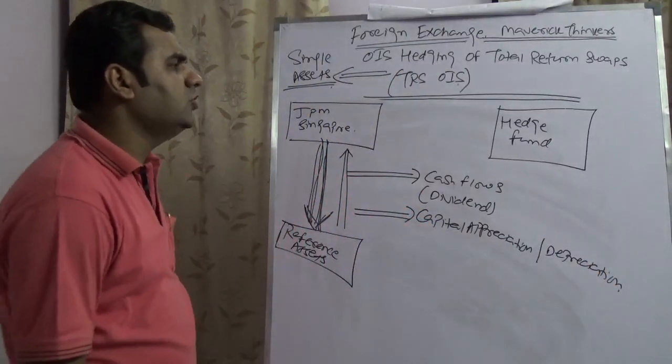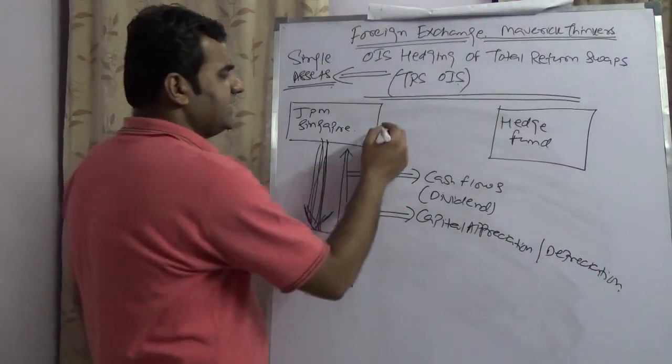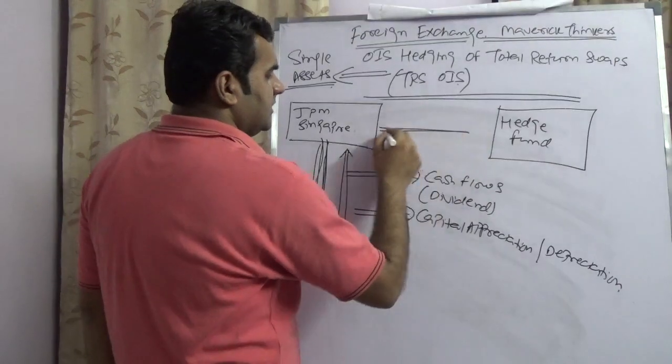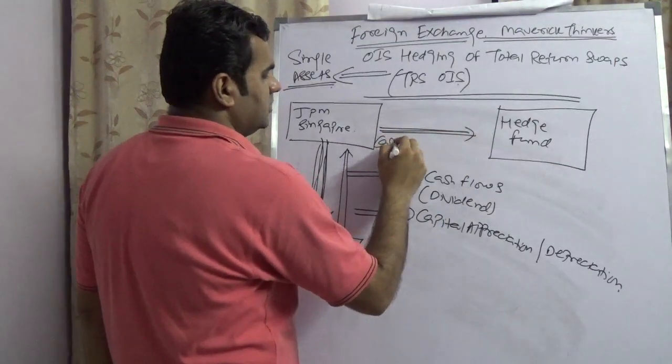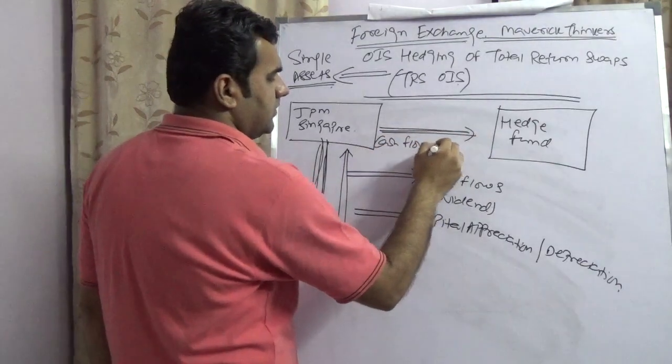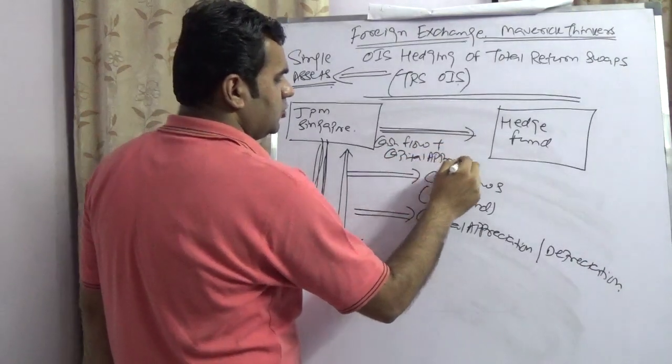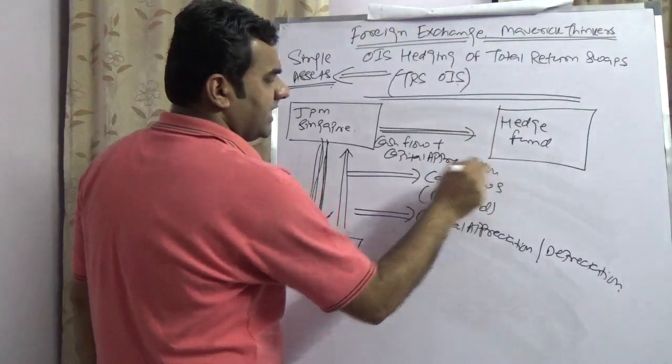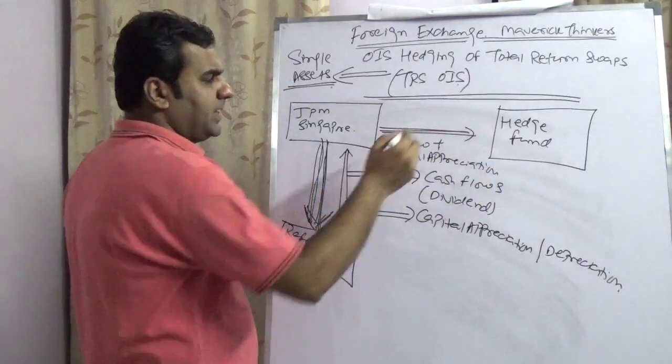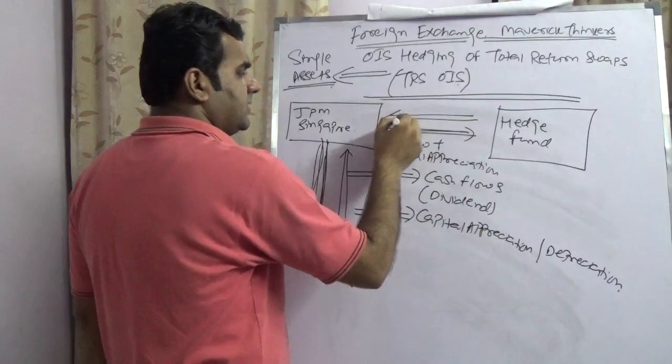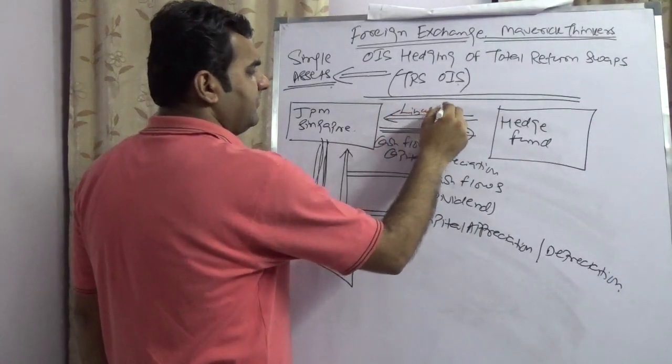Now they are entering into TRS. In this, the bank would pass this cash flow plus capital appreciation to the hedge fund. Hedge fund will pass some LIBOR plus a few basis points.